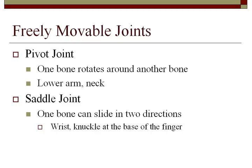The next type of freely movable joint is a saddle joint, which occurs when one bone can slide in two directions. Your wrist is made up of many bones, and the bones in your wrists are saddle joints — they can slide in two different directions. A joint that is easier to isolate would be the knuckle at the base of your fingers. If you look at your thumb, you can slide it up and down, and you can slide it side to side, but it is difficult to slide it on a diagonal. That's because you're dealing with a saddle joint.